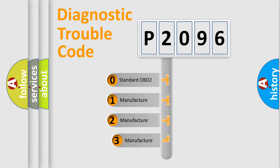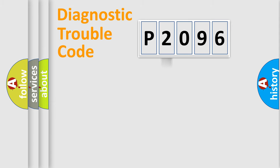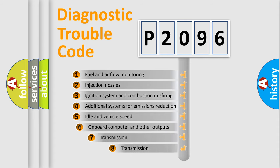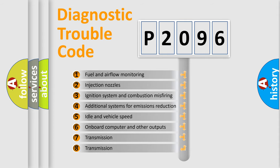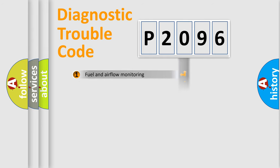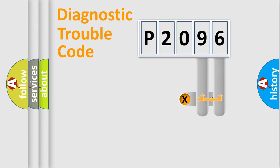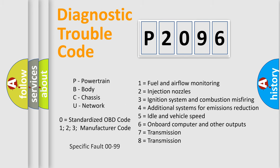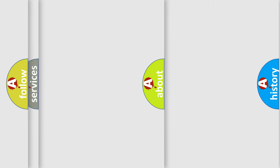If the second character is expressed as zero, it is a standardized error. In the case of numbers 1, 2, 3, it is a car-specific error. The third character specifies a subset of errors. The distribution shown is valid only for the standardized DTC code. Only the last two characters define the specific fault of the group. Let's not forget that such a division is valid only if the second character code is expressed by the number zero.